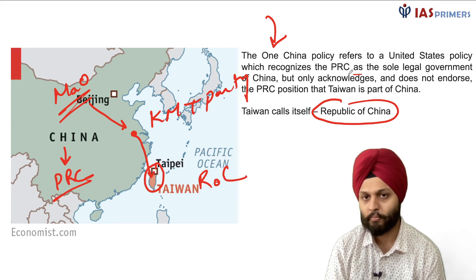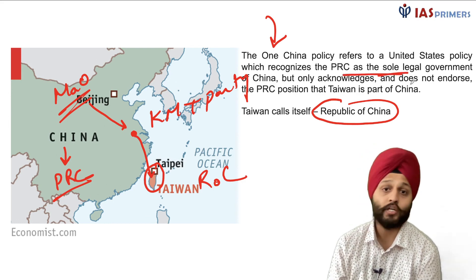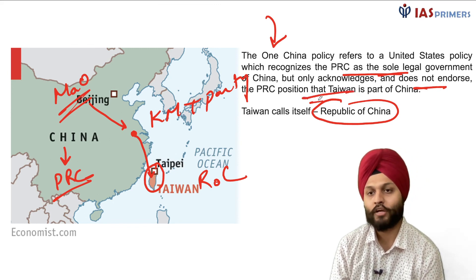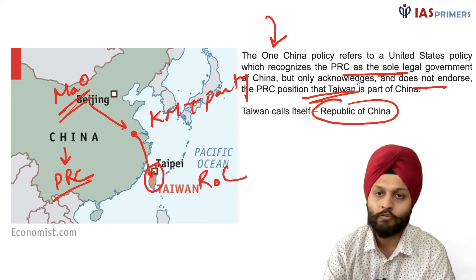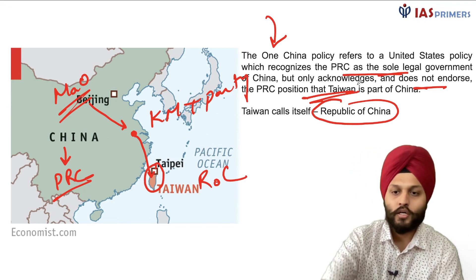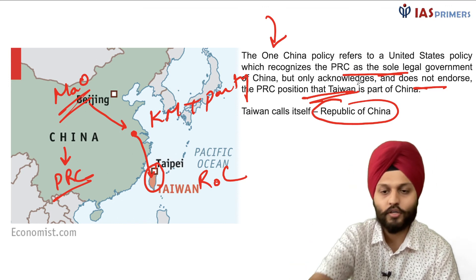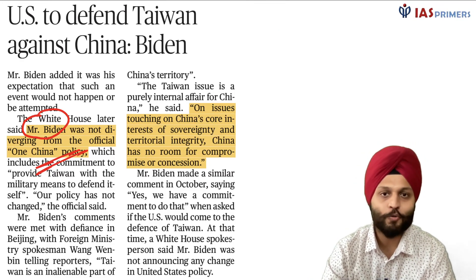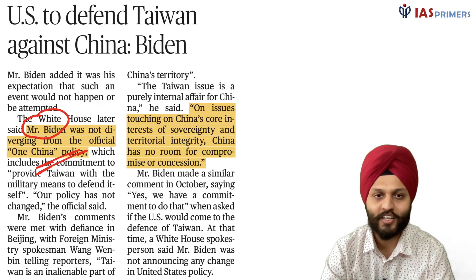The One China Policy recognizes the PRC as the sole legal government of China. The US position is that it does not endorse the PRC position that Taiwan is part of China. That concludes our daily news analysis session. Thank you for tuning in to IAS Primers with me, Shubhashish. Bye bye, take care, and all the best.